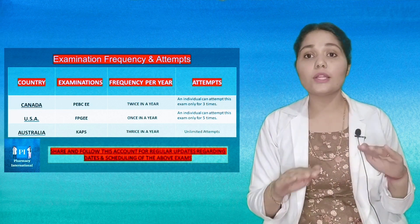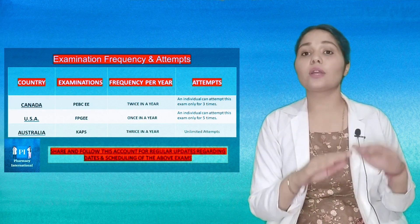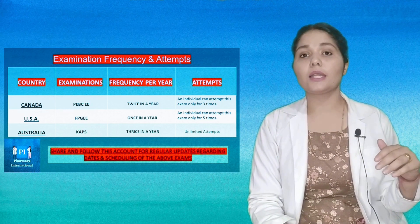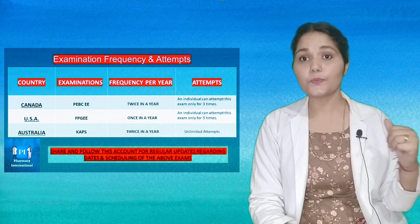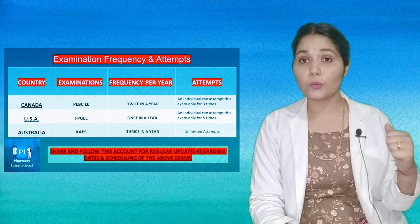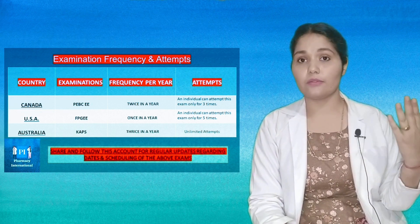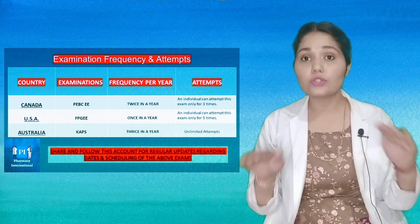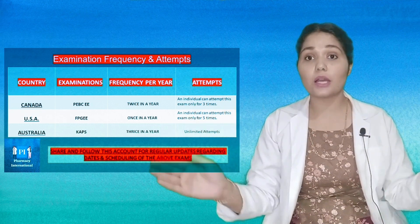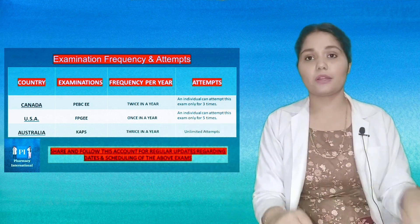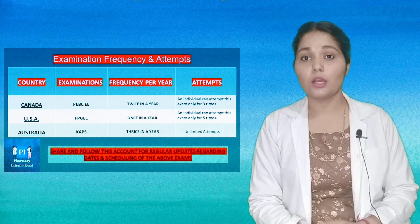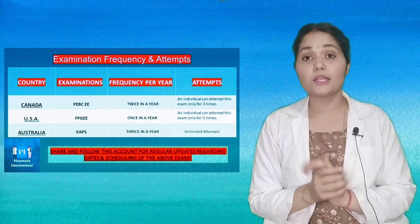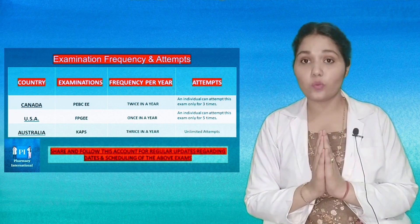So you can make a difference between the three countries: for Canada the examination is PEBC EE and the attempts are three; for USA the attempts are five; and for KAPS, that is for Australia, you have unlimited attempts. Wishing you all the very best to appear and clear this examination in your first attempt.